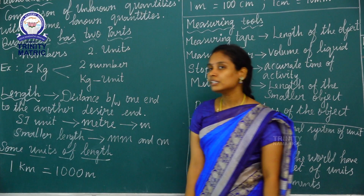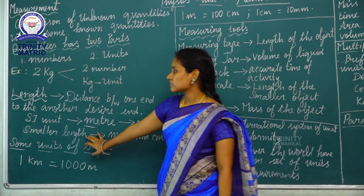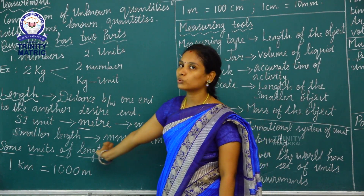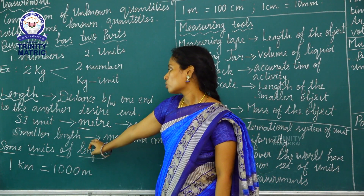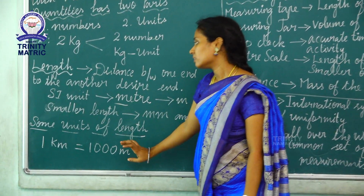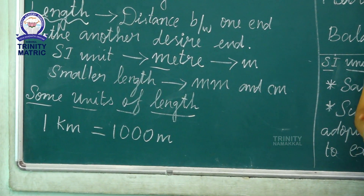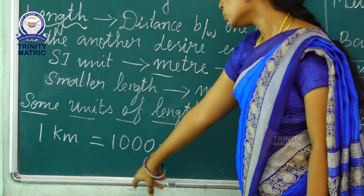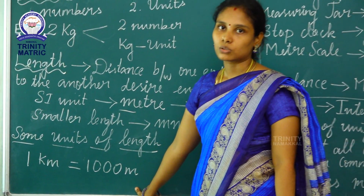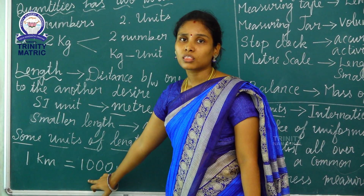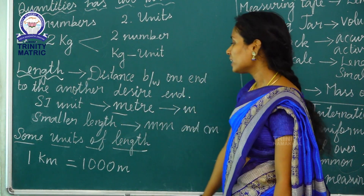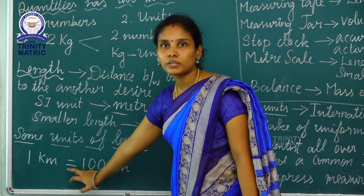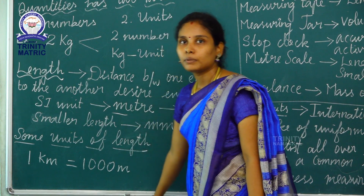Smaller length is measured using millimeter and centimeter. Some units of length: 1 kilometer is equal to 1000 meters.